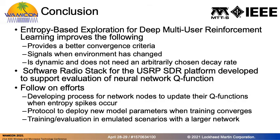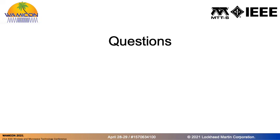In summary, we've shown that using entropy-based exploration for training this deep reinforcement learning problem can define better convergence criteria and indicate when more training is needed. We also showcased our software-defined radio stack used to measure over-the-air results for the trained dynamic spectrum access model. Our follow-on efforts include developing a process for network nodes to update their Q functions via a protocol that sends model parameters from the central training server, and we'd also like to do training and evaluation in emulated scenarios with a larger network.